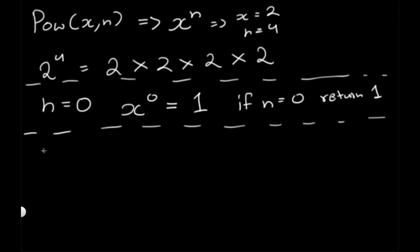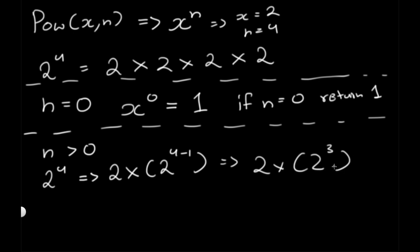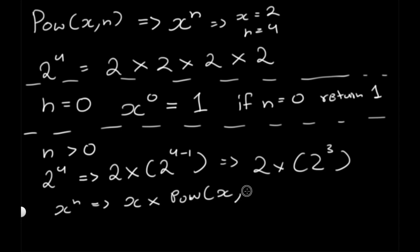The other case we need to think about is when n is greater than 0. For example, 2 to the power of 4 is nothing else but 2 multiplied by 2 to the power of 3. We're going to use this to solve when n is greater than 0, by calling x multiplied by the power function on x, n minus 1.